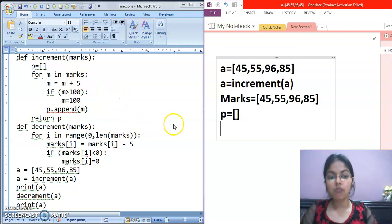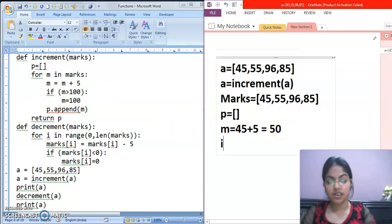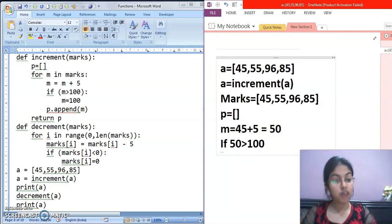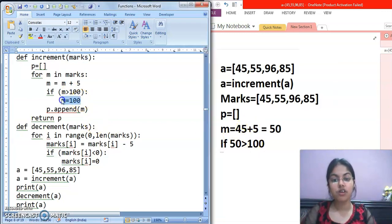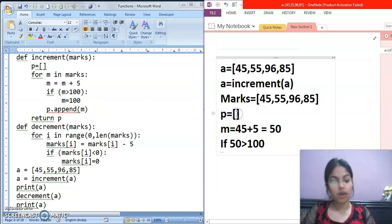Now for M in marks. That means M may first value kya aegi? 45. So M equals to M plus 5. 45 plus 5. That means 50. If M is greater than 100. If 50 is greater than 100. Condition will be true or false. 50 is greater than 100. So condition is false. So that means this M equals to 100 will not get executed. P dot append M. Now P mein we append M. M ki value kya hai? 50.